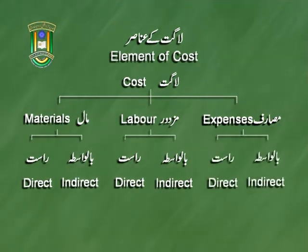تیسرا عنصر لاغت کا expenses یعنی مصارف ہے۔ مصارف کو بھی دو حصوں میں بانٹتے ہیں: ایک راست مصارف (direct expenses) اور دوسرا بالواسطہ مصارف (indirect expenses)۔ Direct expenses وہ ہیں جو کسی ایک شعبے یا کام کے لیے خرچ کیے جاتے ہیں، جیسے import duty، excise duty، اور مولڈنگ machine کے لیے خرچ۔ Indirect expenses جیسے advertisement، insurance اور tax — یہ کسی ایک شعبے یا کام کے لیے نہیں رہتے — انہیں بالواسطہ مصارف کہتے ہیں۔